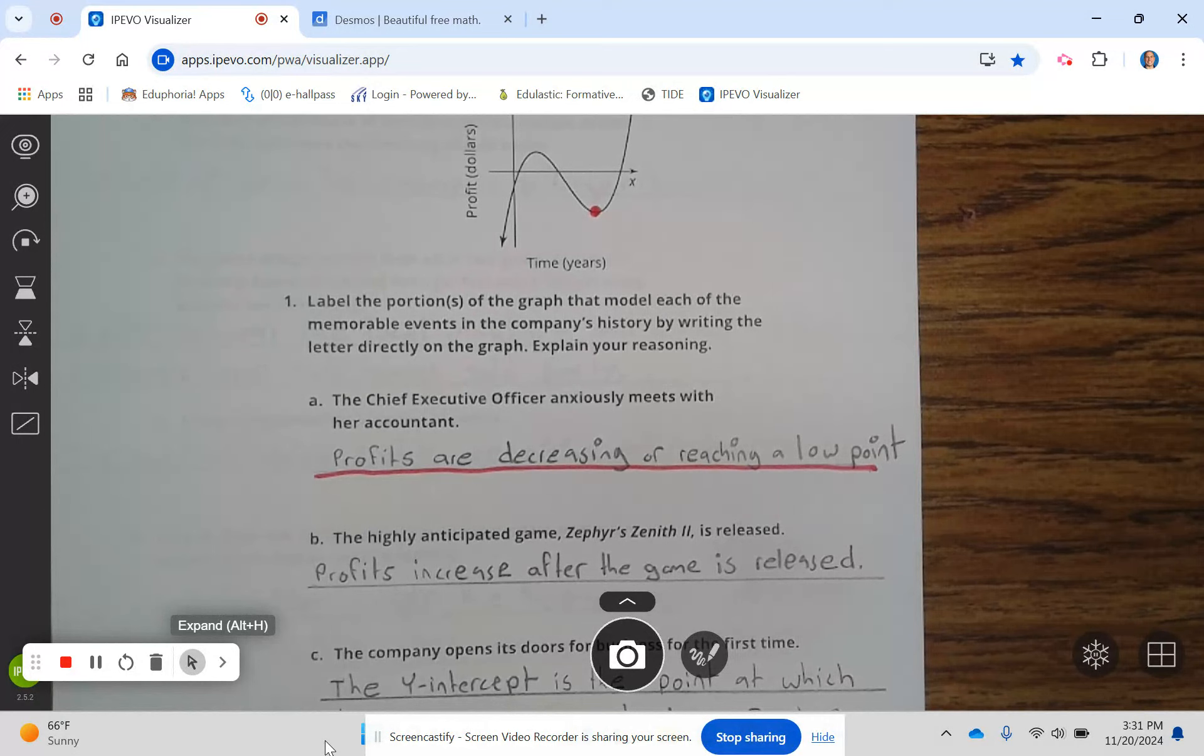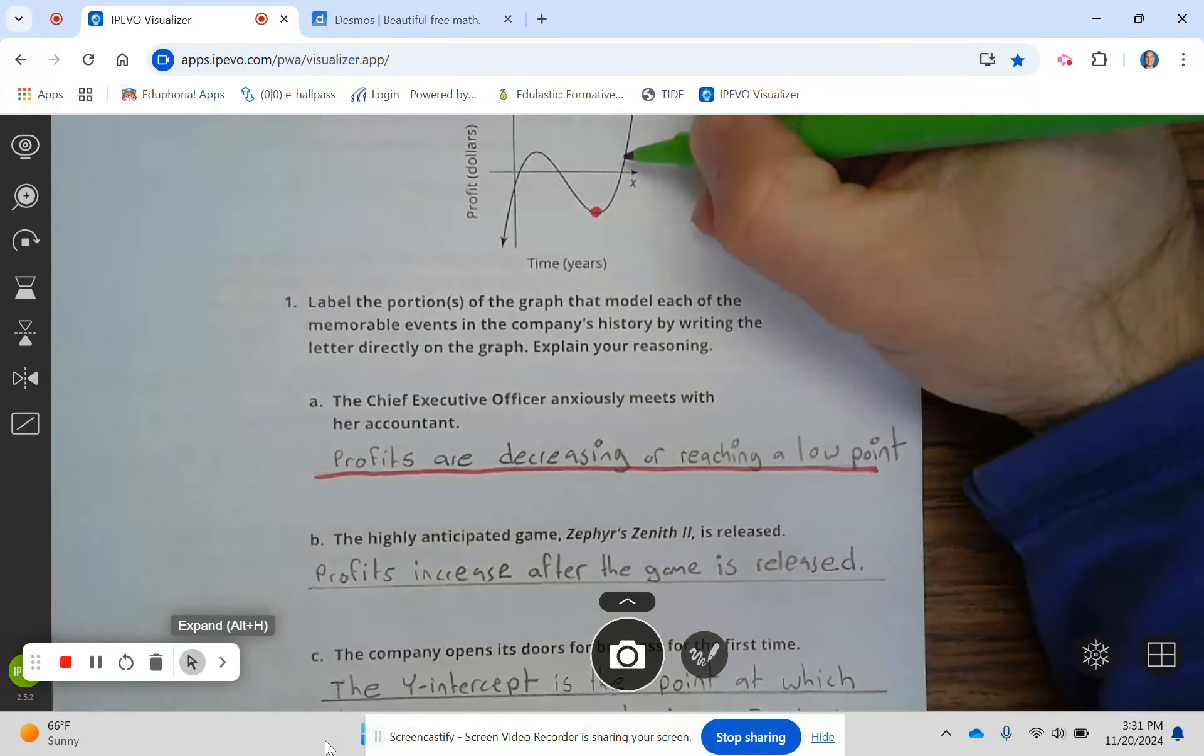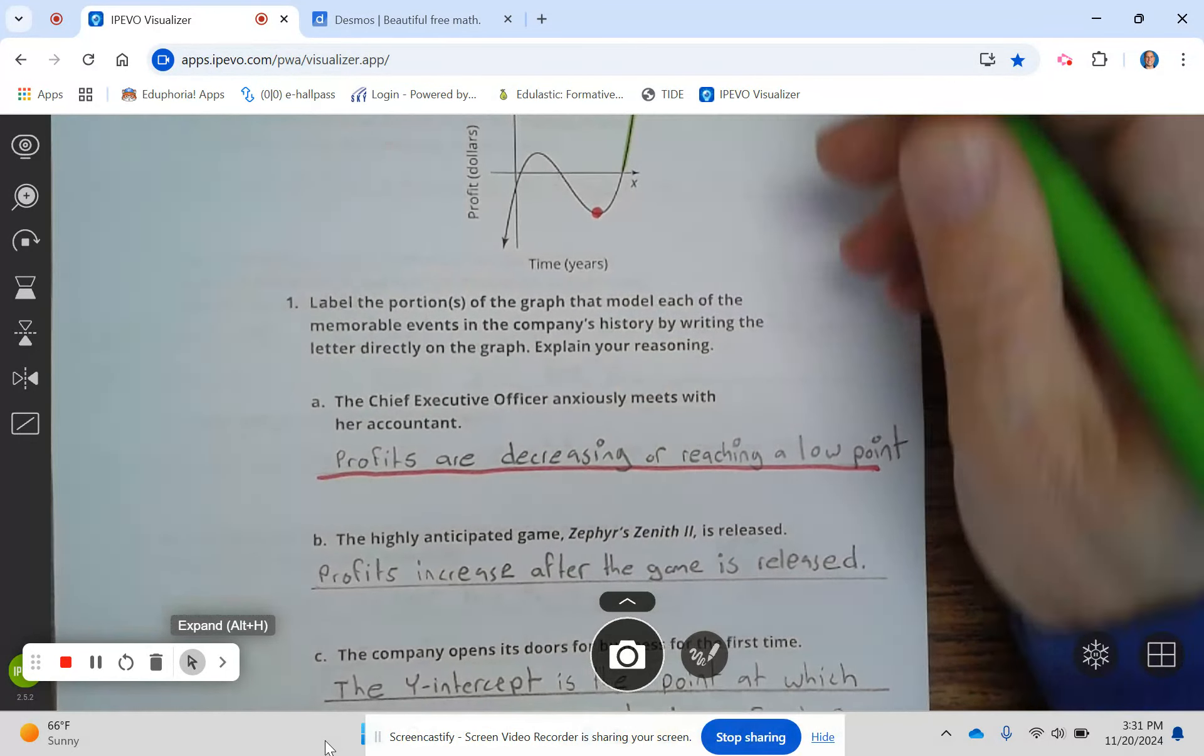B. The highly anticipated game, Zephyr and Zinus, is released. The profits increase after the game is released, which is this portion right here.